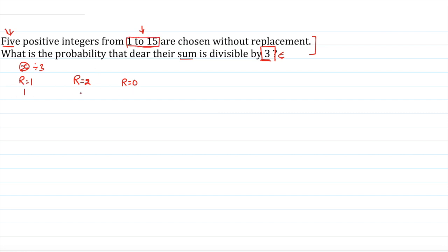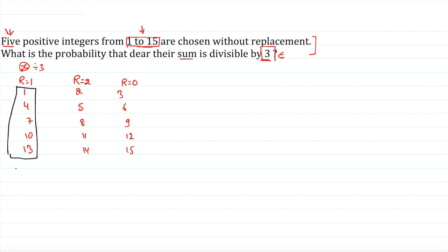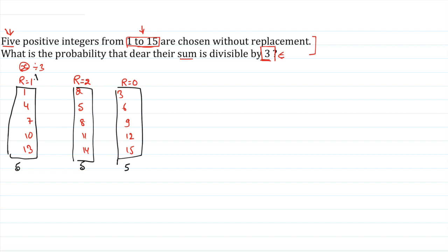Dividing 1 to 15 into these 3 categories, we get 5 numbers in each category. The first category (remainder 1) is represented by +1, the second category (remainder 2) is represented by −1, and the third category (remainder 0) is represented by 0.